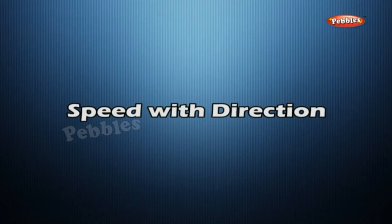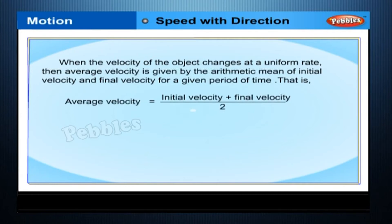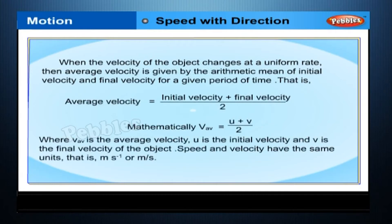Speed with Direction. When the velocity of the object changes at a uniform rate, the average velocity is given by the arithmetic mean of initial velocity and final velocity for a given period of time. That is, average velocity is equal to initial velocity plus final velocity divided by 2. Mathematically, V_average = (U + V) / 2, where V_average is the average velocity, U is the initial velocity, and V is the final velocity of the object.